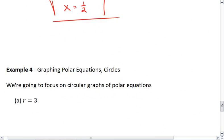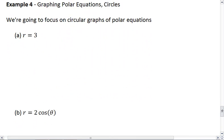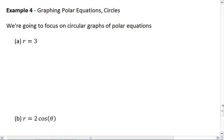Last thing I want to look at is graphing polar equations, in particular focusing on circles. What I want you to see is that if r is a number, that tells you the radius is a particular value and it's always that value. If r is 3, that means our radius is 3, and that creates a circle.